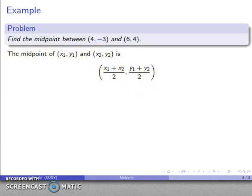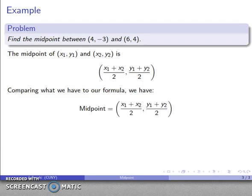The midpoint is going to be this value here, and if we compare this to what we have in our formula, we have x1, that's our first x-coordinate, x2 is our second x-coordinate. So I have x1 is 4, x2, my second coordinate is 6.